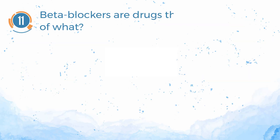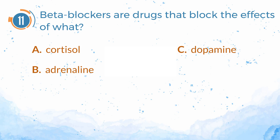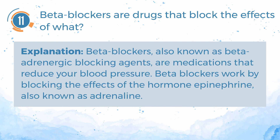Number 11. Beta blockers are drugs that block the effects of what? A. Cortisol. B. Adrenaline. C. Dopamine. D. Atropine. The answer is B. Adrenaline. Explanation: beta blockers, also known as beta-adrenergic blocking agents, are medications that reduce your blood pressure. Beta blockers work by blocking the effects of the hormone epinephrine, also known as adrenaline.